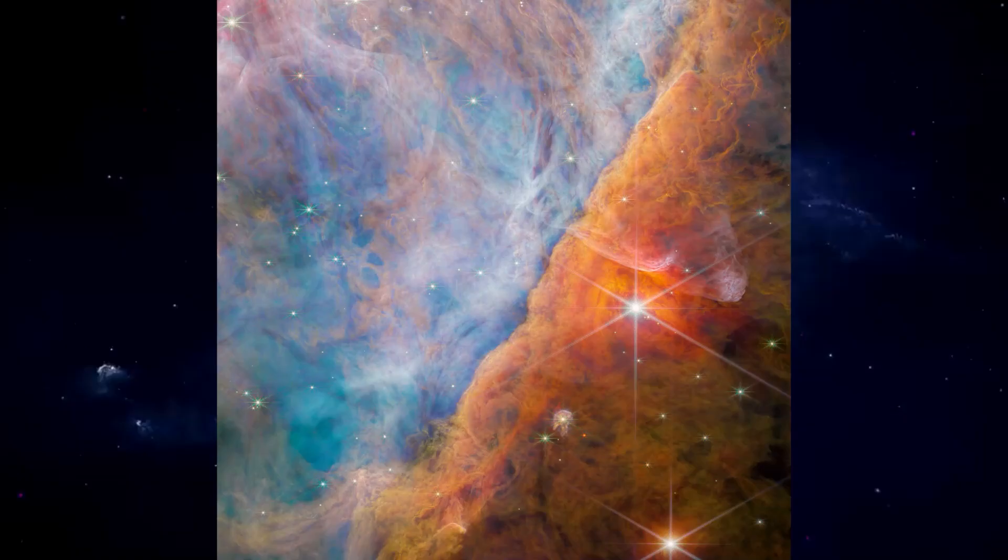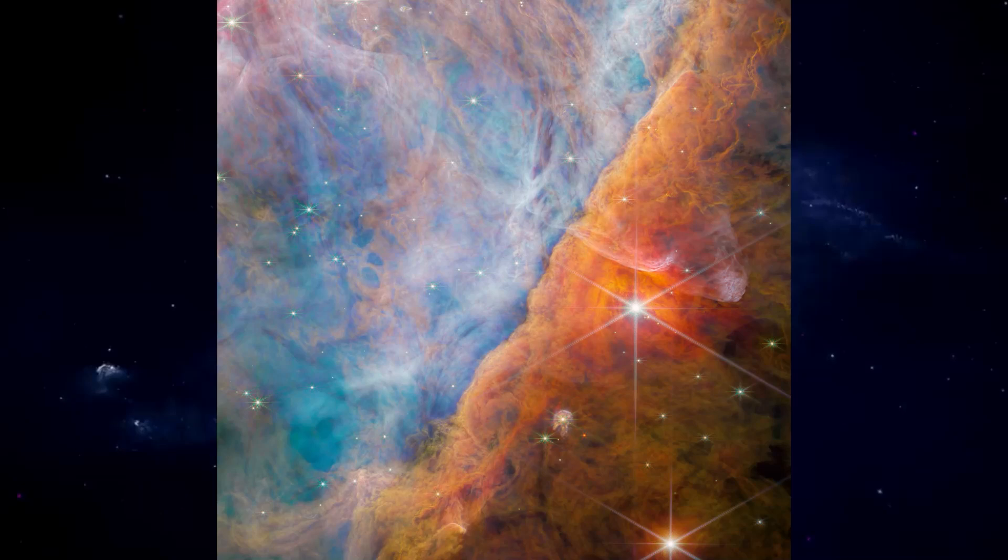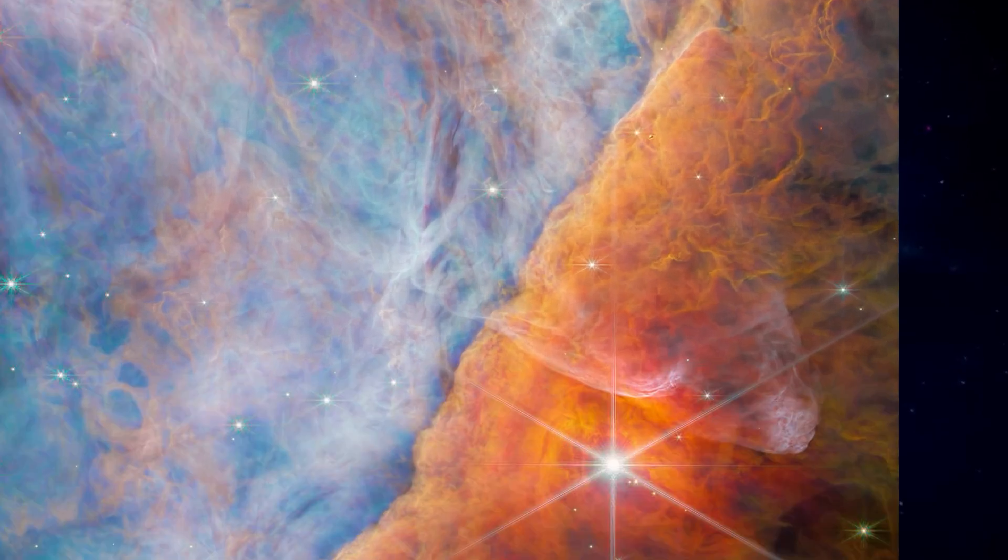In this celestial snapshot, the left image showcases a portion of the Orion bar courtesy of Webb's powerful near-infrared camera instrument. Zooming in, the upper right reveals a smaller area under the watchful eye of Webb's mid-infrared instrument, MIRI, focusing on a young star system named D203-506 with its protoplanetary disk at the centre.